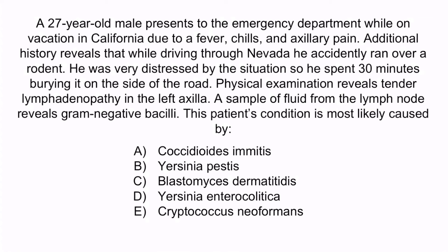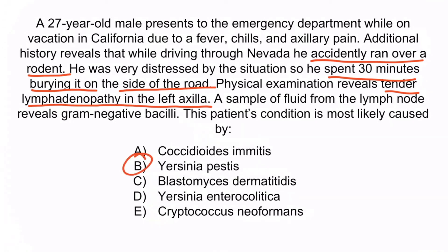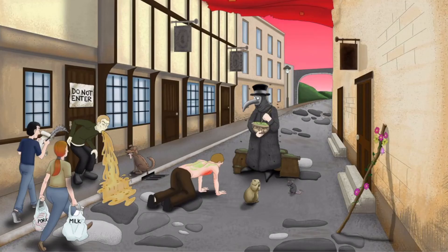There are two key points that should help you identify the causal organism. First, the patient was exposed to a rodent — he accidentally ran over a rodent and then spent 30 minutes burying it on the side of the road. Second, he is presenting with tender lymphadenopathy in the left axilla, which is describing a bubo. Therefore, the causal organism is Yersinia pestis, so B is the correct answer. Recall that the guy with the red swollen armpit is here to help you remember that Yersinia pestis causes buboes.